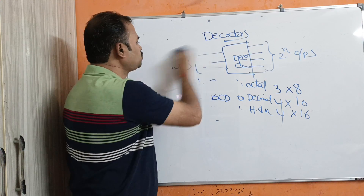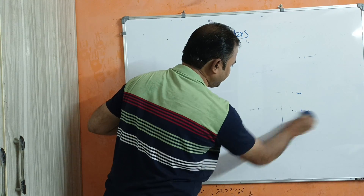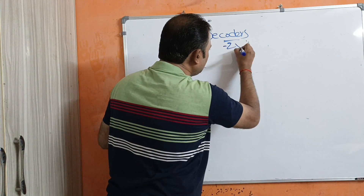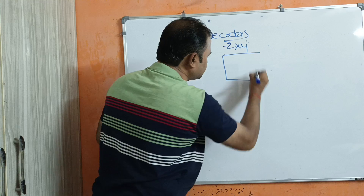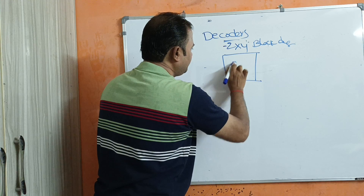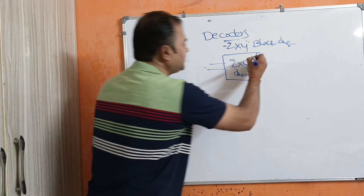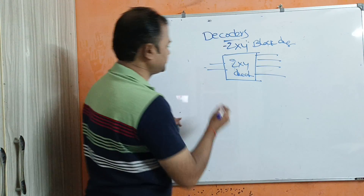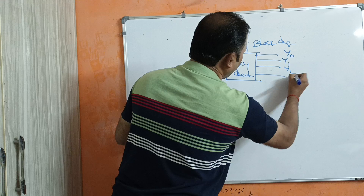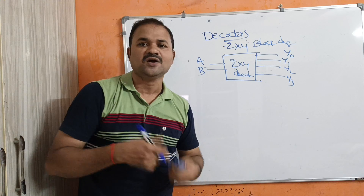Now let us discuss about the 2-by-4 decoder. The name itself specifies the meaning: a 2-by-4 decoder accepts 2 inputs and produces 4 outputs. This is the block diagram of a 2-by-4 decoder. Let the inputs be A and B, and let the outputs be Y0, Y1, Y2, and Y3. So it accepts 2 inputs and produces totally 4 outputs.